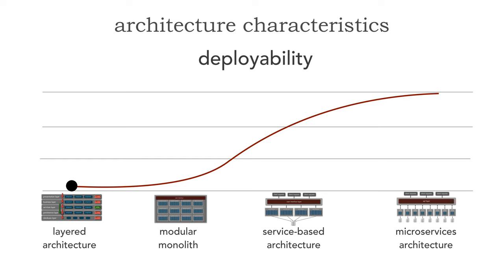Also, the deployment risk is high in a layered architecture. When we deploy, we deploy 100% of the functionality, and consequently there's a chance of breaking something. So our risk is fairly high, and usually because of that, the frequency of deployment is usually measured in weeks, sometimes months. The problem is that the longer we wait to deploy, the more features that are added that may not have been tested well together.